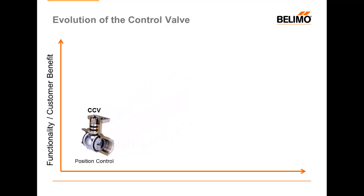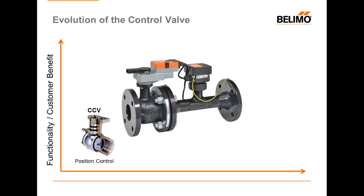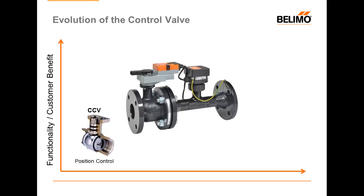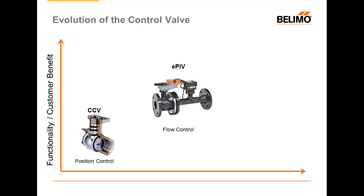Position control valves were the standard for a very long time in commercial HVAC operation. But within the last 10 or 15 years, a new type of valve has come into the marketplace: pressure-independent valves. Pressure-independent valves are what is known as flow control valves, which means that the control signal now directly controls the amount of GPMs that go through the valve. So instead of a valve being halfway open at 50% of the control signal, we're now going to receive a specified number of GPMs every time we go to that same control signal. This is a vast improvement over position control valves and gives us much better control over our coils. Let's take a look at some of the advantages of using flow control.